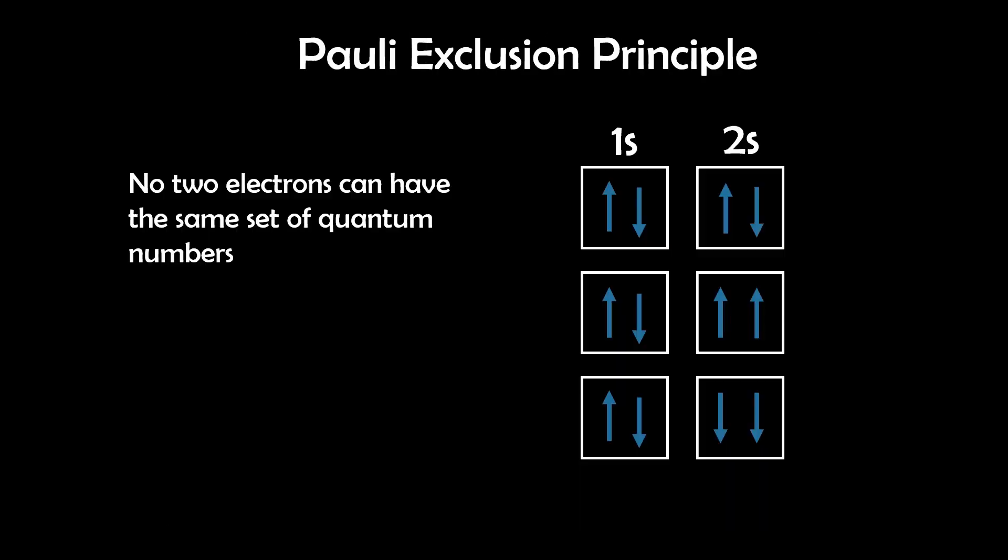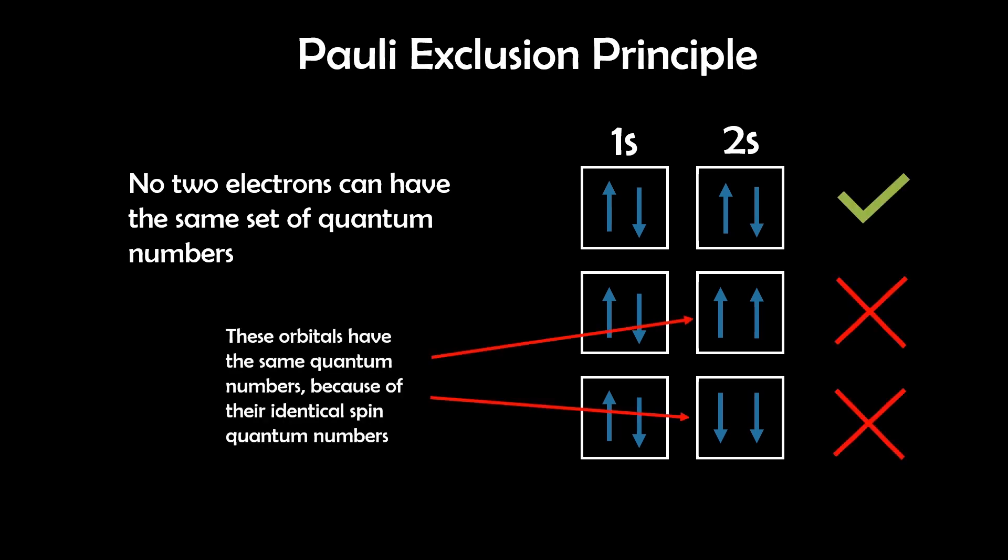The next rule is the Pauli exclusion principle, determining that each orbital holds a maximum of up to two electrons with opposite spins, because no two electrons can have the same set of quantum numbers.